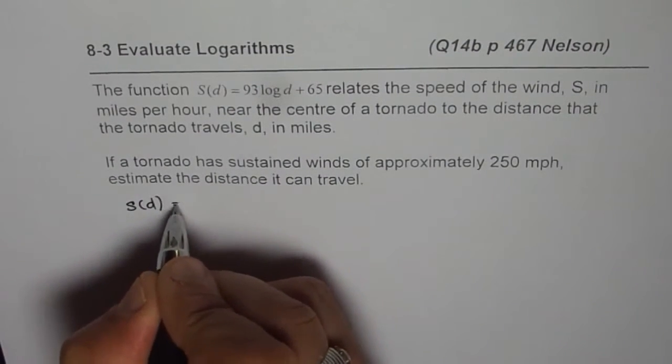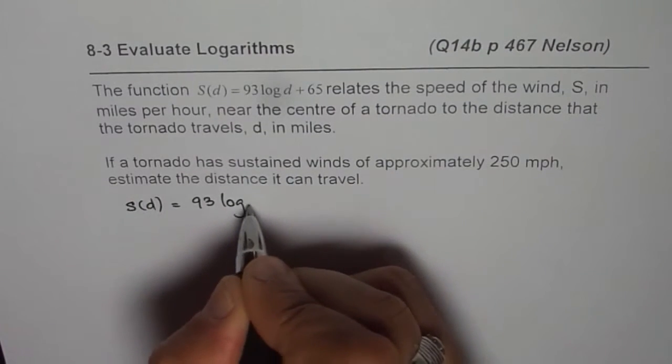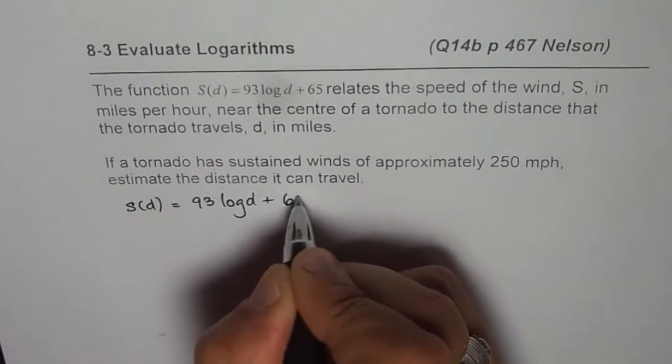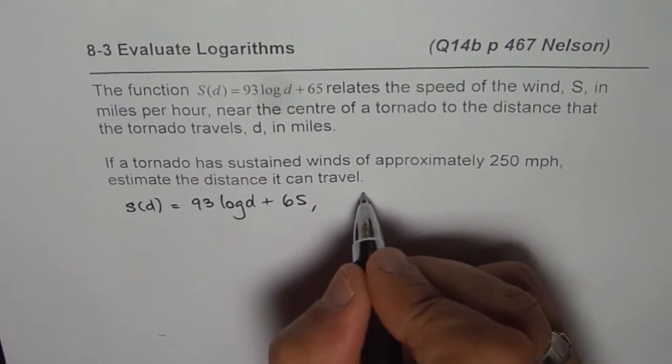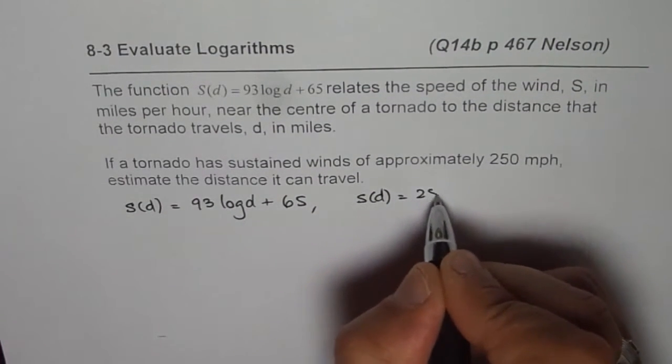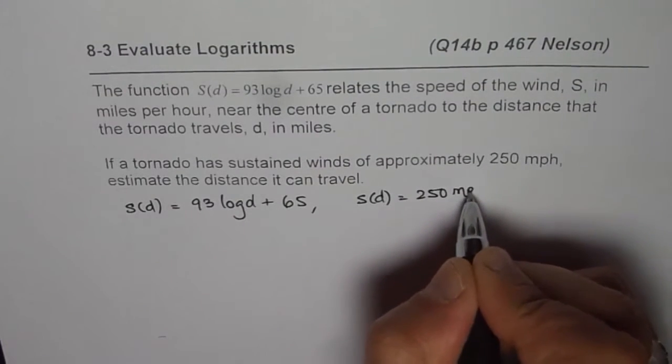It is S(D) equals 93 log of D plus 65. So we are given speed which is 250 miles per hour.